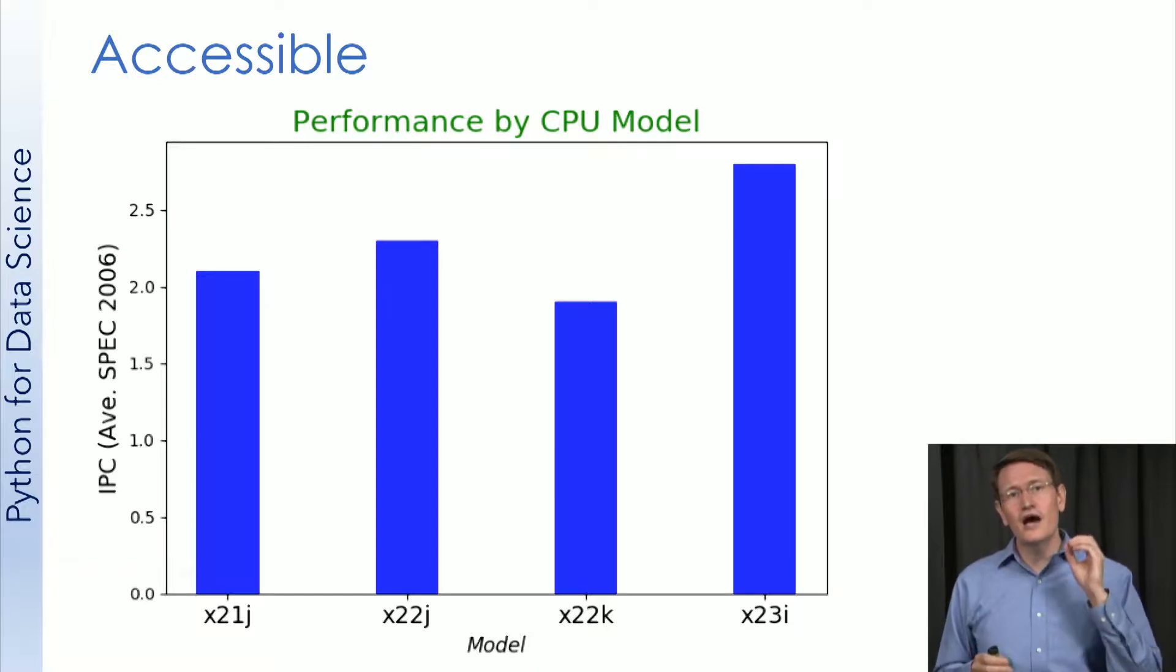But for someone not in computer architecture, this graph means virtually nothing. You don't know what these models of processors are, so you don't know why they may perform differently. You likely don't know what IPC is, or even what SPEC 2006 is. So for a non-expert, this figure is clearly not accessible. It's unreadable and has no relevance to them. And if a viewer doesn't know that IPC is just one component of performance, this could be unintentionally misleading.